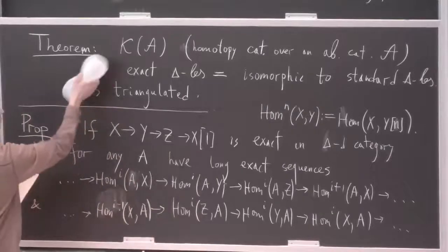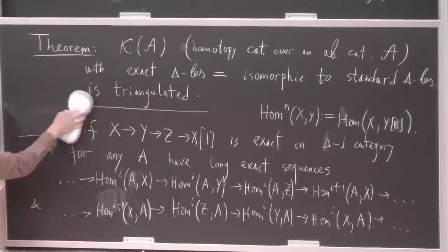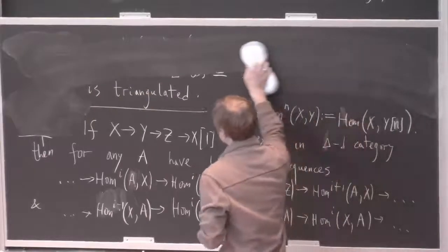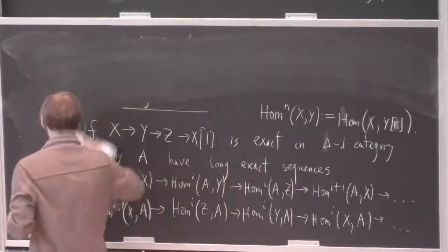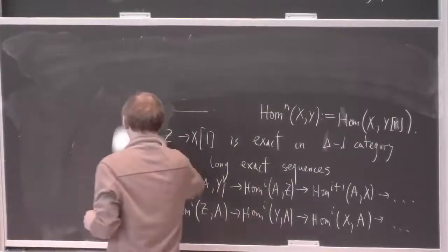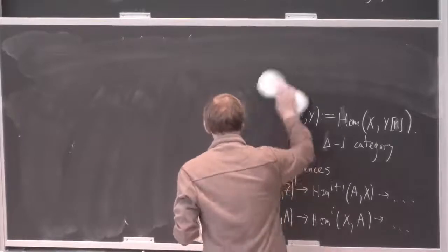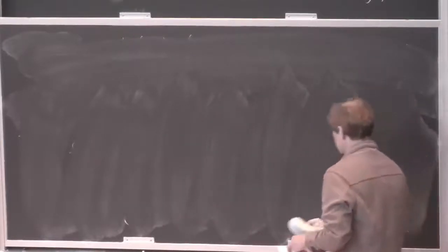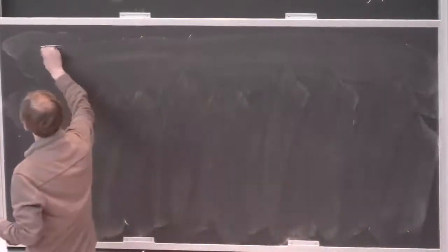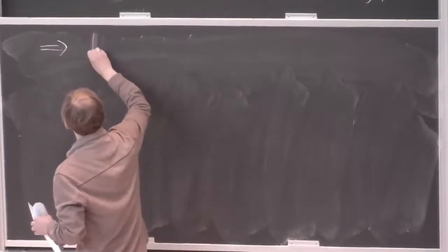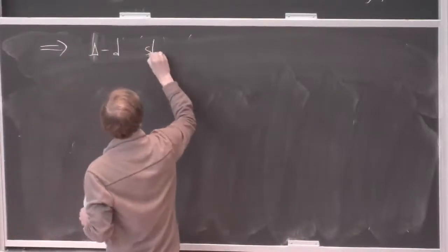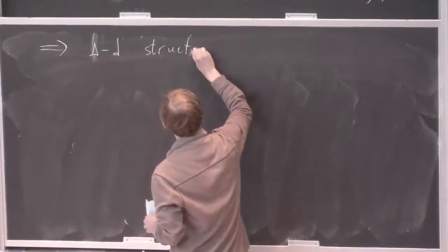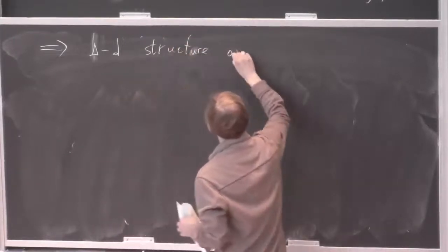If S is compatible with triangulated structure, then T[S^{-1}] has an induced triangulated structure. The exact triangles in the localization are those isomorphic in the localized category to images of exact triangles from T. It's a formal check — which I will skip — to show this gives a triangulated structure. Applying this to quasi-isomorphisms in the homotopy category, we get a triangulated structure on the derived category.